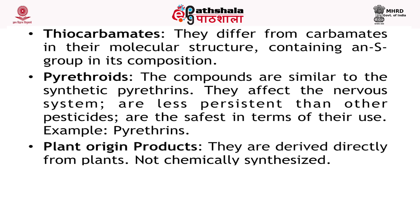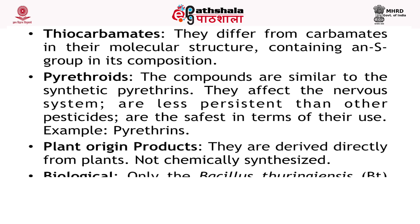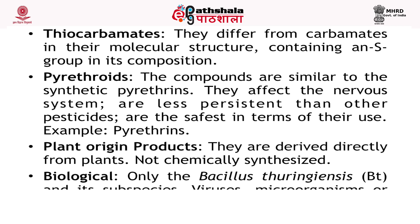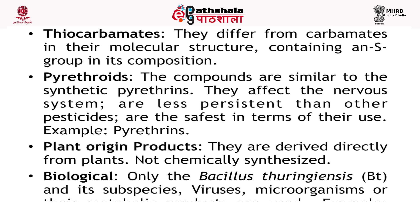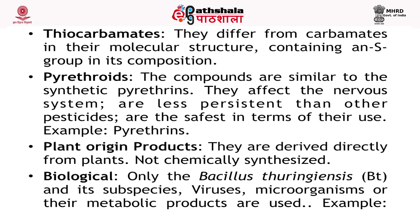Plant-origin products are derived directly from plants, not chemically synthesized. Biological pesticides use only Bacillus thuringiensis and its subspecies, viruses, microorganisms or their metabolic products. They are applied against forest pests and crops, particularly against butterflies and caterpillars. Examples include Dipel, Foray, and Thuricide.